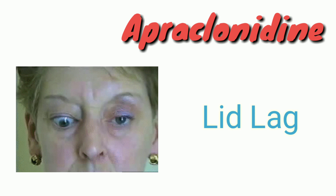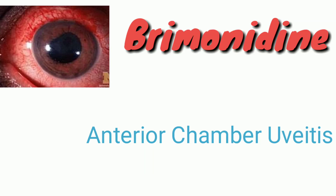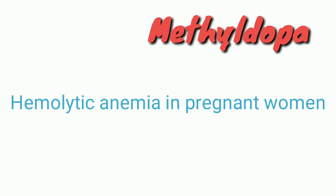Apraclonidine is a type of sympathomimetic and its most common ADR is lid lag — that is, the person's eyelid moves upward while the globe is facing downward. Brimonidine causes anterior chamber uveitis, meaning inflammation of the middle layer of the eye, especially the iris. Methyldopa causes hemolytic anemia in pregnant women.